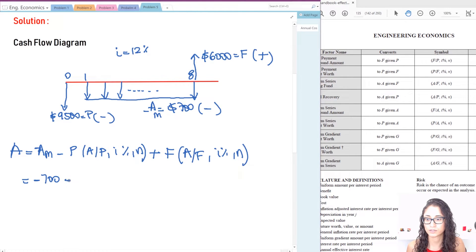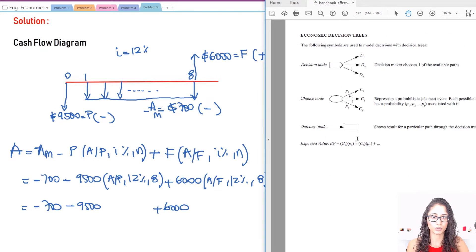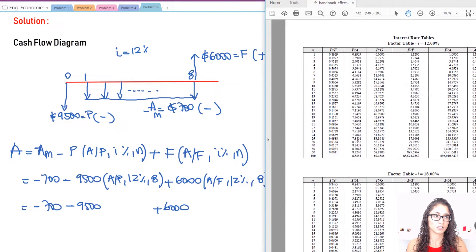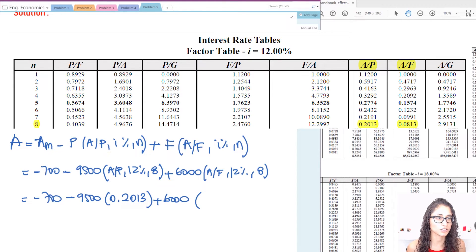So let's start plugging numbers. So I have minus $700 minus P, which is $9,500. Now I have A to P, we have 12% and we have eight years. Plus I have $6,000, A to F. Again, we have same thing, 12% and number of years is eight. So now we need to go to the tables and find these values right here. So we're looking for 12%. So we have it right here. So it's on page 142. And we're looking for N is eight years, 0.2013. And the second value is A to F, which is here. And then I'm looking for eight years, which is 0.0813.